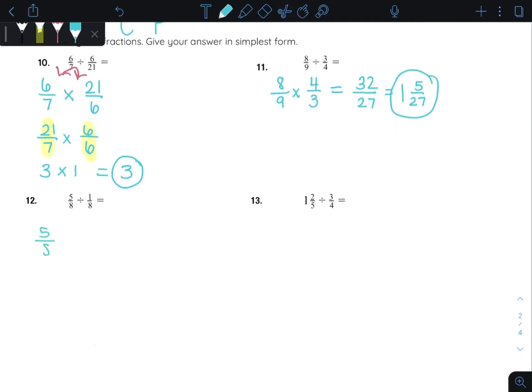Number twelve. Keep it, change it. Oops, I didn't change it. Change it and flip it. I see a little trick here, but I'm going to just do it normal. So five times eight would be forty. Eight times one would be eight. But I know that forty over eight means forty divided by eight, which is just five. You could have used the trick here, though, and switched those, and it would have simplified before you multiplied.